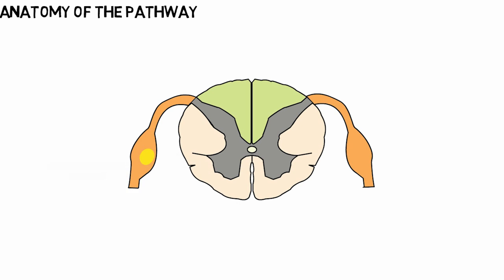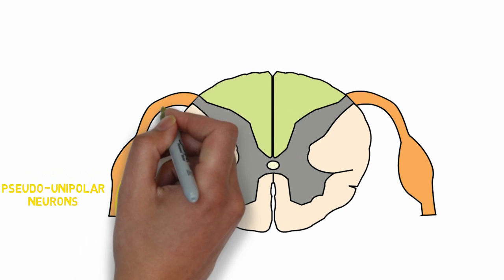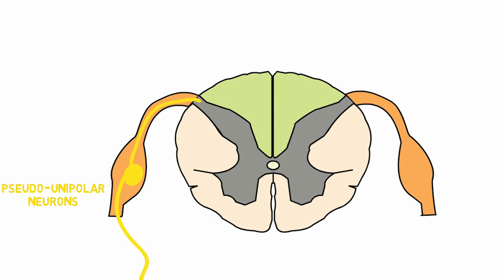This is a cell body of a neuron in the dorsal root ganglion, and these neurons are known as the pseudo-unipolar neurons because their one process splits into two processes. The peripheral process innervates the receptors we just discussed and carries the sensory information to the spinal cord through its central process.